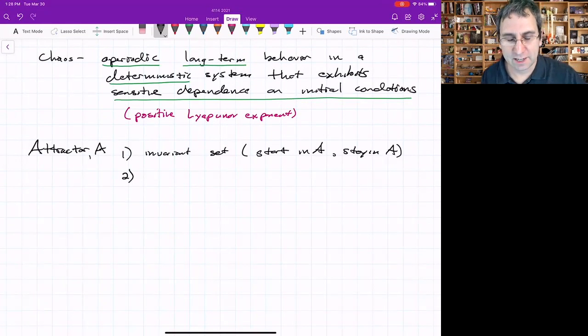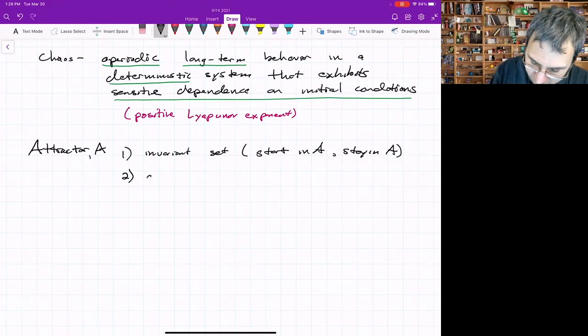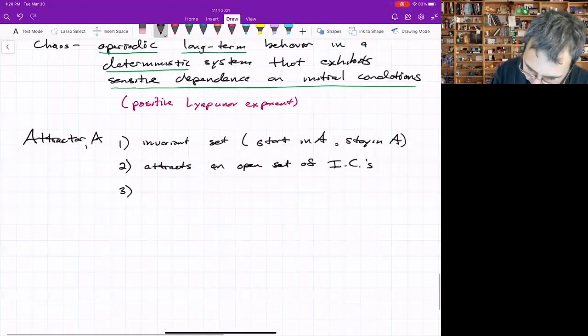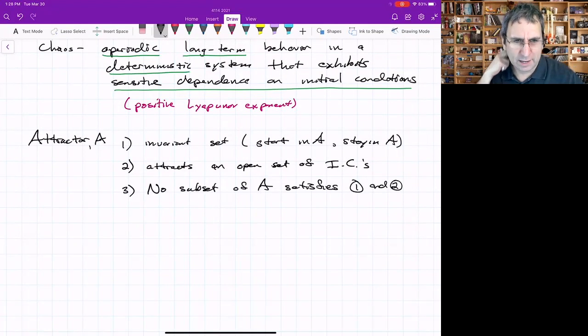It also attracts an open set of initial conditions in the phase space. And the third one is kind of odd, but there is no subset of A that satisfies one and two. This is sometimes called the minimal condition.